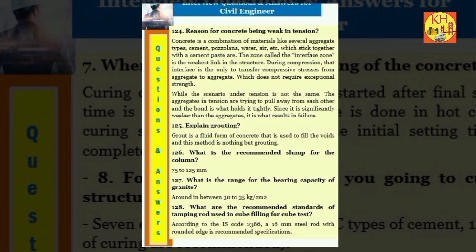Question 125: Reason for concrete being weak in tension. Concrete is a combination of materials like several aggregate types, cement, pozzolana, water, air, etc., which stick together with a cement paste are the zone called the interface zone, is the weakest link in the structure. During compression, that interface is the only to transfer compressive stresses from aggregate to aggregate, which does not require exceptional strength. While the scenario under tension is not the same. The aggregates in tension are trying to pull away from each other and the bond is what holds it tightly. Since it is significantly weaker than the aggregates, it is what results in failure. Question 126: Explain grouting. Grout is a fluid form of concrete that is used to fill the voids and this method is nothing but grouting.